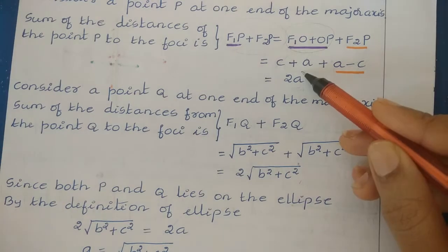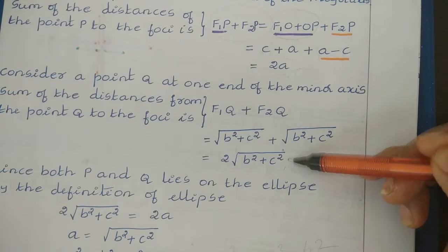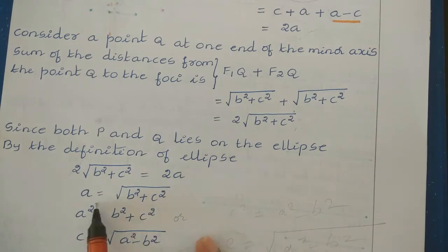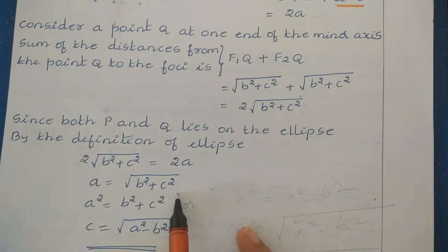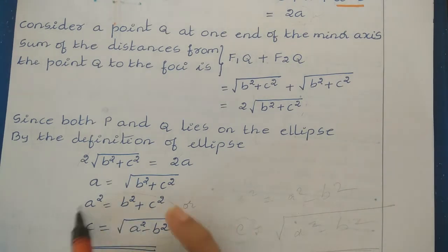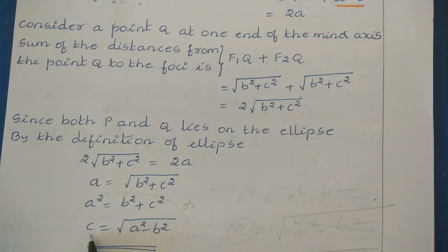Since both P and Q lie on the ellipse, the sum of distances to the foci must be equal. So 2a = 2√(b² + c²), which gives a = √(b² + c²). Squaring both sides: a² = b² + c². This can also be written as c² = a² − b², or c = √(a² − b²). This is the relation between the semi-major axis a, semi-minor axis b, and the distance of the foci from the center c.